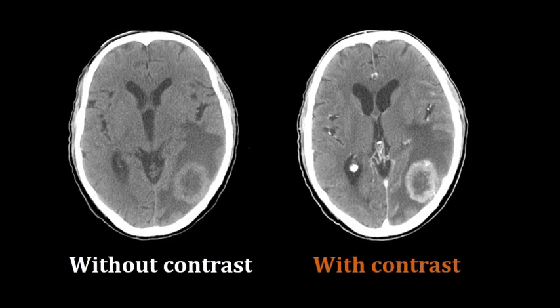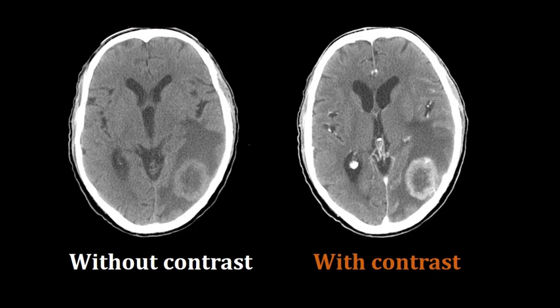These two images provide an example. The first image at the left was scanned without contrast — there is clearly a metastatic lesion but the borders are not clearly defined, and we can see there is no bleeding. The image to the right shows the same patient scanned with contrast, and now the borders of the tumor are clearly defined. If we had scanned with contrast immediately, it might have been difficult to tell if this was an enhancing tumor or a bleeding tumor.